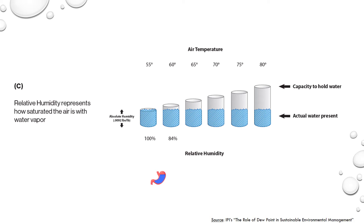As we continue increasing the temperature, the capacity of those cylinders increases and the water fills those cylinders less and less. At 65 degrees, the relative humidity is down to 70%. And as we increase the temperature, the relative humidity decreases until we're at a toasty 80 degrees with a 42% relative humidity. Now the bodybuilder was 20% full, so you could say that his capacity to hold cake or water is even greater.